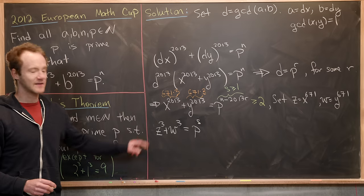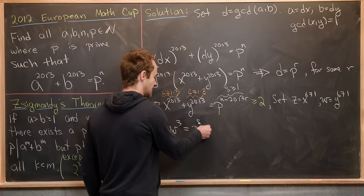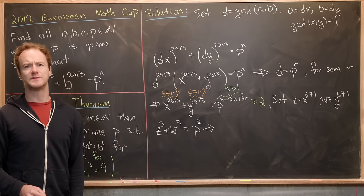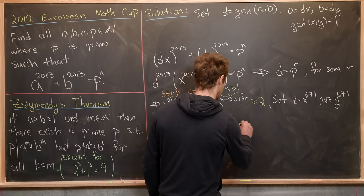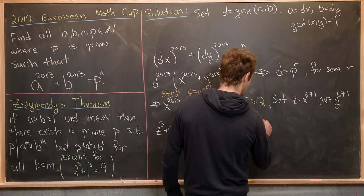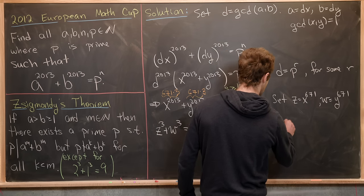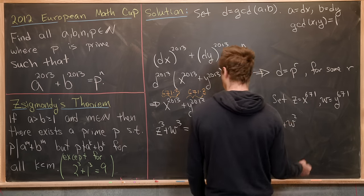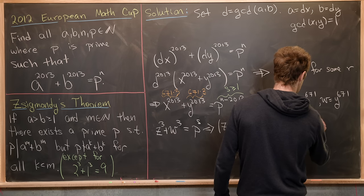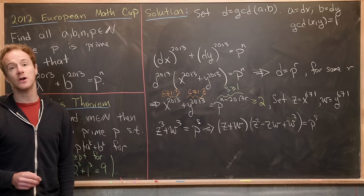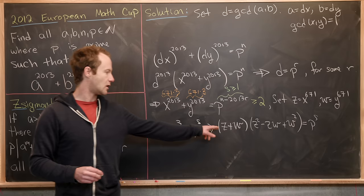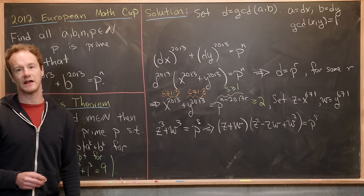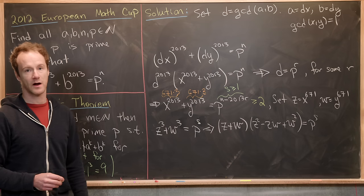Okay, now we'll take the left-hand side and factor it. We know sum of cubes has a standard factorization, so we can factor that like z plus w times z squared minus z w plus w squared. That's equal to p to the s. And again, we know our right-hand side is a power of a prime, which means all multiplicative components on the left-hand side are also power of a prime.